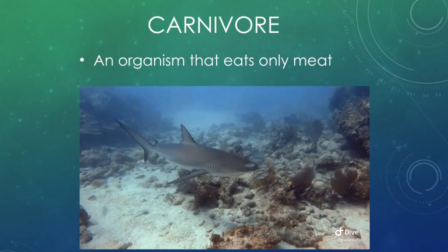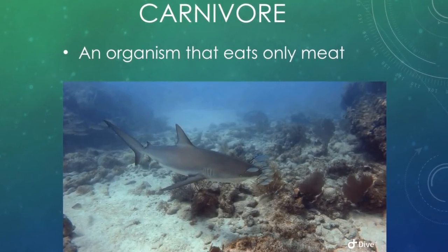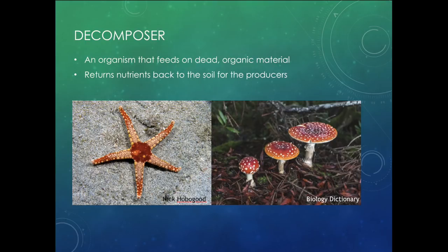Finally we have our carnivores. Carnivores eat meat — think about your lions and your sharks. Carnivores are going to be at the top of the food chain normally. Our last role in an ecosystem in terms of what they consume are your decomposers. Decomposers are the organisms that feed on dead organic material. They return the nutrients back to the soil, which helps the producers photosynthesize and create new energy. It's like one big circle of energy flowing in each ecosystem.